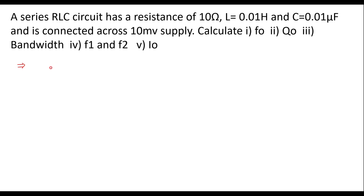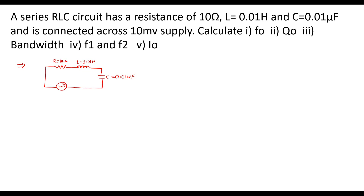I will draw the series RLC circuit. We have R is equal to 10 ohm, L is equal to 0.01 Henry, and C is equal to 0.01 microfarad, and the supply voltage is 10 millivolt. Let us assume that current I is flowing in the circuit.